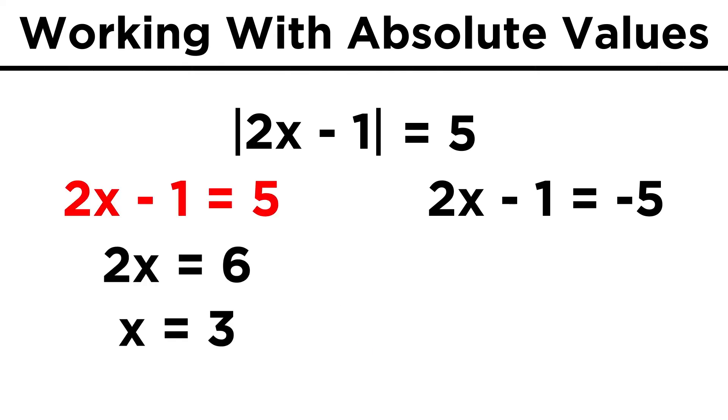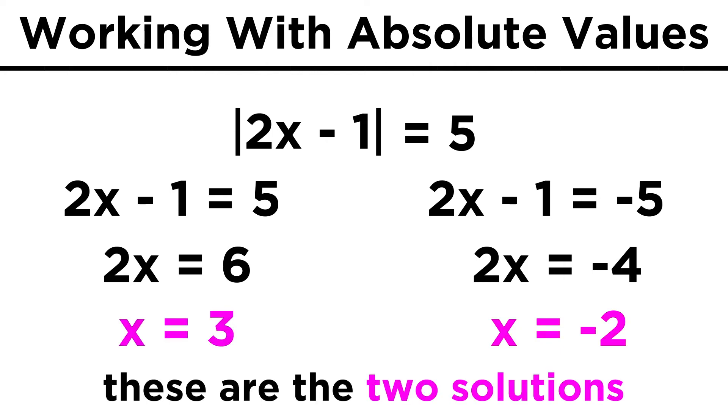For the first one, we add one, divide by two, and x equals three. For the other, we do the same thing, but we get x equals negative two. So those are the two solutions in this case.